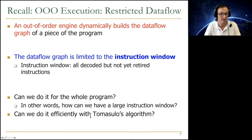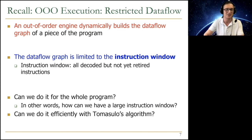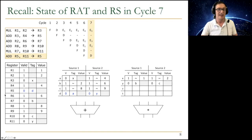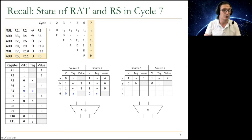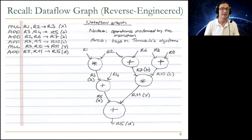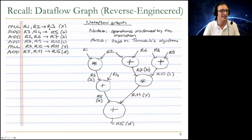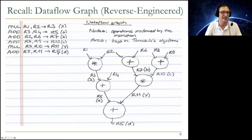We also discussed whether we can do this efficiently with Tomasulo's algorithm. In yesterday's lecture, by carefully looking at the state of the register alias table and reservation stations in cycle seven of the simulated machine, we were able to completely reverse-engineer the dataflow graph. As an exercise, you could also go from the dataflow graph to the sequential instruction order by thinking about how the dependencies and values relate.